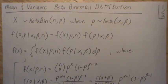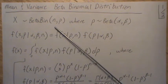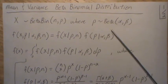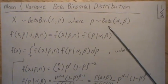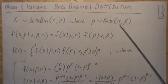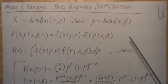In this video we're going to derive the mean and the variance for a beta binomial random variable. We let X be a beta binomial with parameters N and P, where P is a random variable distributed with the beta parameters alpha and beta.